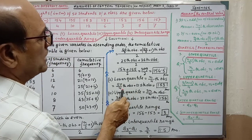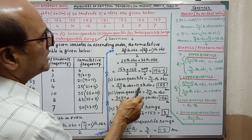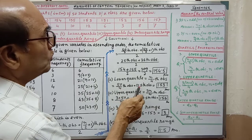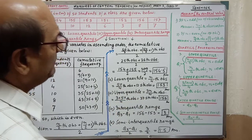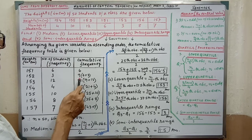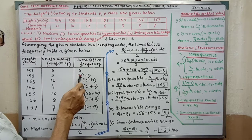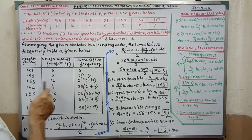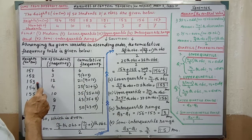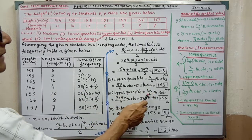After putting in the value and simplifying, we get the 12.5th observation. Looking at the cumulative frequency table, the 12.5th observation falls in the class with cumulative frequency 21. Therefore Q1 equals 153.